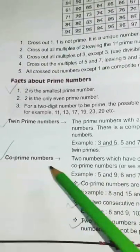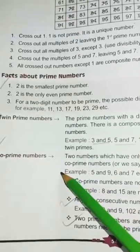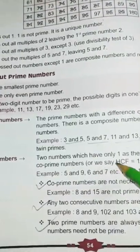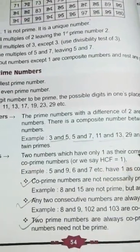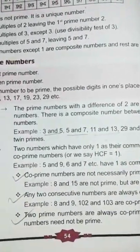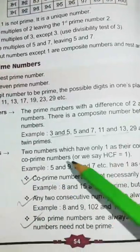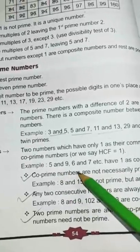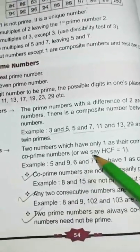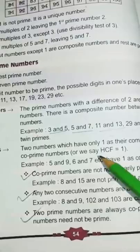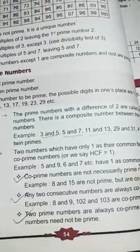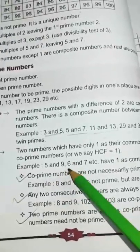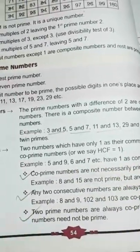Then, comes to co-prime numbers. What are co-prime numbers? Two numbers which have only 1 as their common factor are called co-prime numbers. For example, 5 and 9, 6 and 7, etc. have 1 as common factor. These numbers have common factor 1.